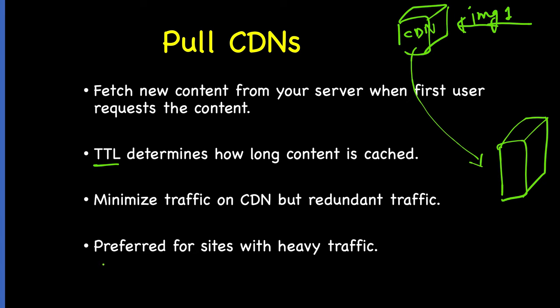Pull CDNs are preferred when sites have heavy traffic, as the traffic is spread out more evenly with only recently requested content remaining on the CDN. The most recently requested resources will be on the CDN; otherwise they will not be cached there.